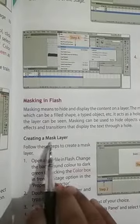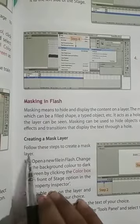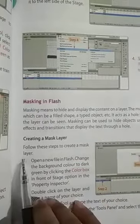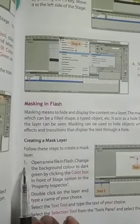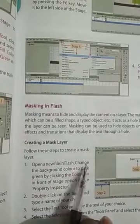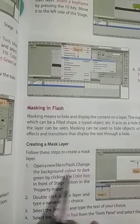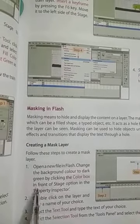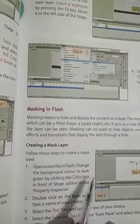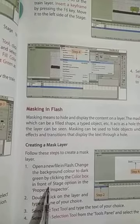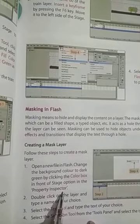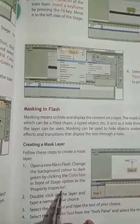Creating a mask layer. Follow these steps to create a mask layer. First, open a new file in a place. Change the background color to dark green by clicking the color box in front of the stage option in the property inspector.